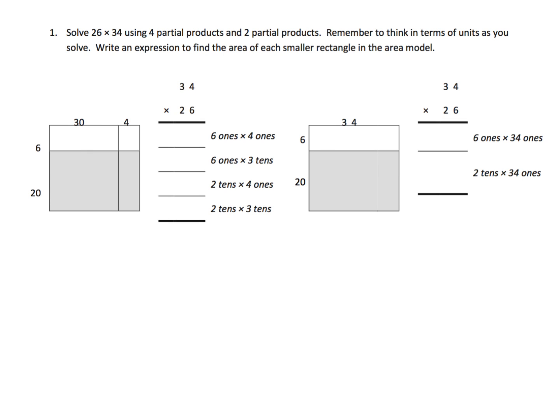So we have two instances of the same problem. Right here, we have the partial products where there's four, the area model, where there's four partial products, and this is what it would look like vertically. And then over here, we have the same problem, 26 times 34, only now it's shown as two partial products, and over here, this is where it starts to look a lot like the standard algorithm. So let's get going on this. Starting over here with the four partial products, we see that this is 180, we see that this area is 24 square units, we see that this is 600 square units, and that's 80 square units.